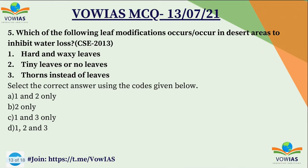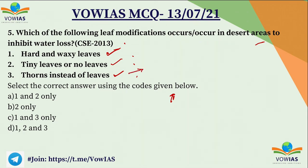The fifth question is from a previous year CSE 2013 paper: 'Which of the following modifications occur in desert areas to inhibit water loss? First, hard and waxy leaves. Second, tiny leaves or no leaves. Third, thorns instead of leaves.' Hard and waxy leaves limit water evaporation; tiny or no leaves also reduce water evaporation; and thorns instead of leaves work on the same principle — for example, cacti have thorns instead of leaves. So D, 1, 2, and 3, is the correct answer.